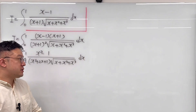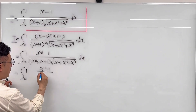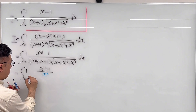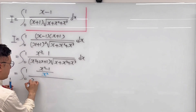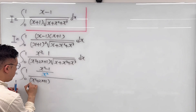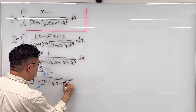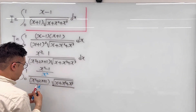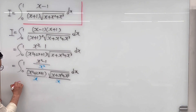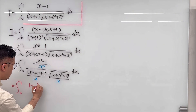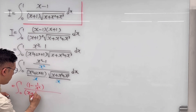Let me divide both numerator and denominator by x squared. The numerator becomes (x squared minus 1) over x squared. For the denominator, dividing (x squared plus 2x plus 1) by x gives x plus 1 over x plus 2.